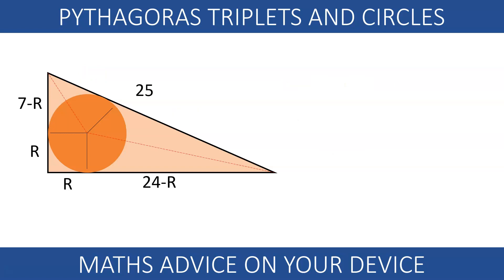Interesting! And again, the third Pythagorean triplet will fit a circle with radius 3.